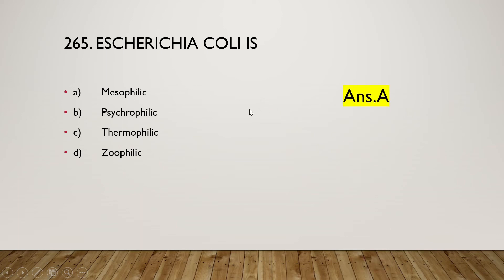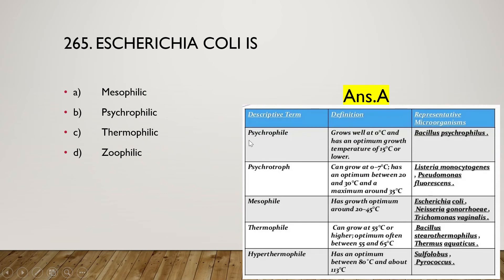Escherichia coli is mesophilic, psychrophilic, thermophilic, or xerophilic? The right answer is option A, mesophilic. Psychrophilic organisms have an optimum growth temperature of 15°C or lower. Mesophiles grow optimally at 20–45°C. Thermophiles grow at 55°C or higher with an optimum of 55–65°C. Hyperthermophiles have an optimum between 80°C and 113°C.